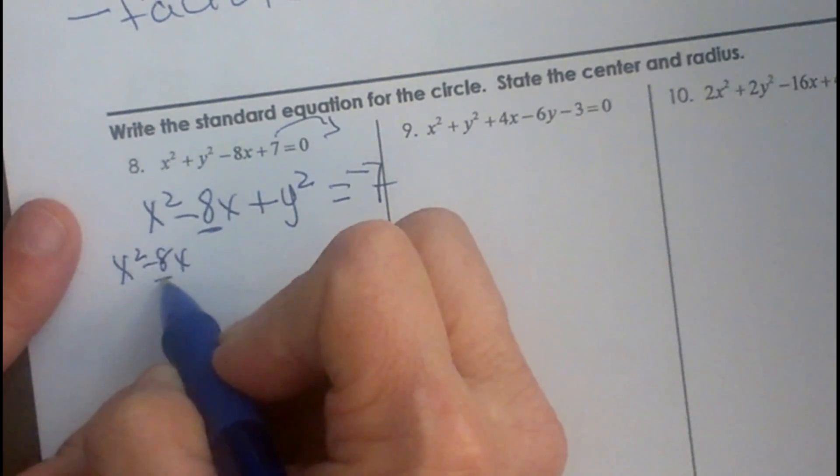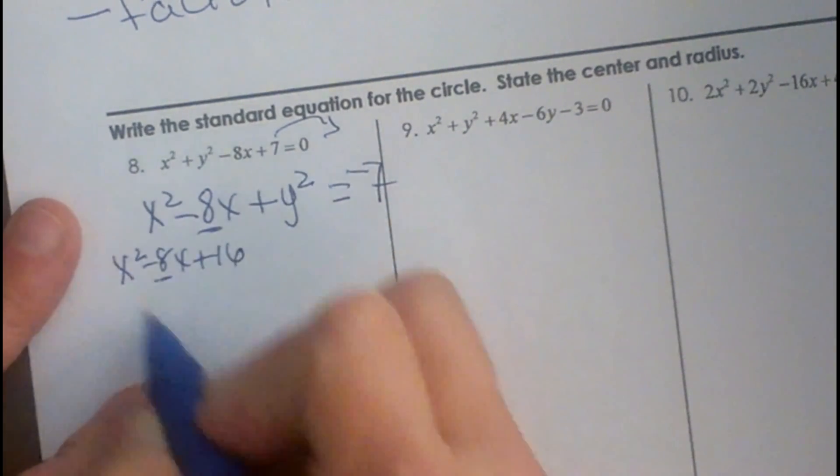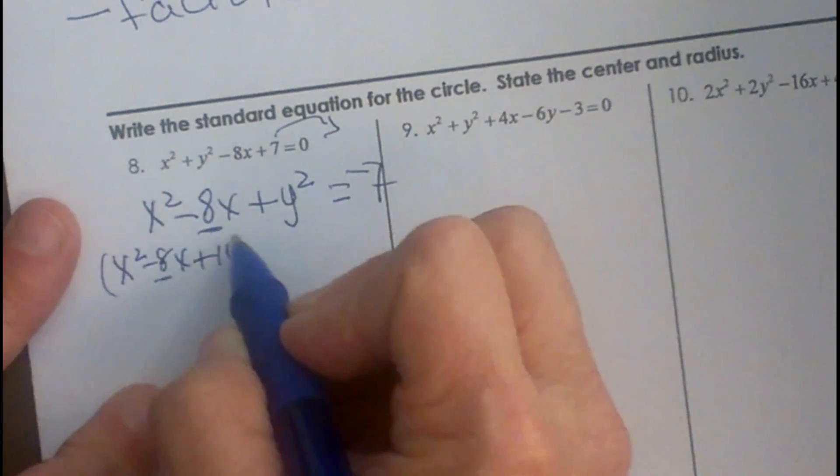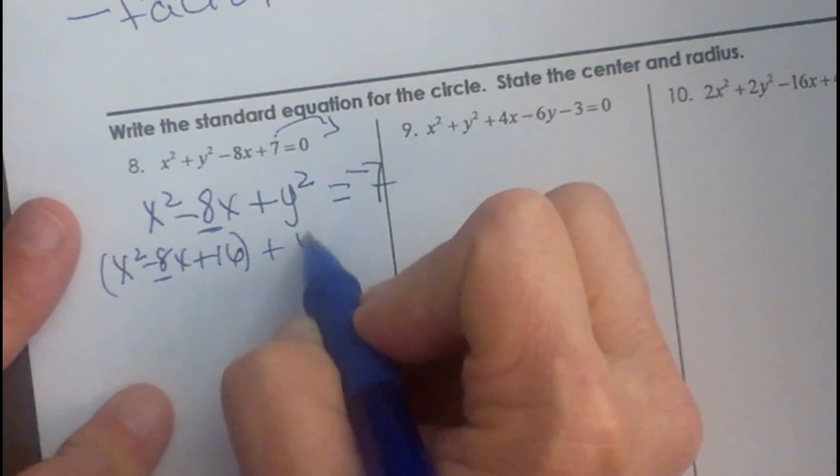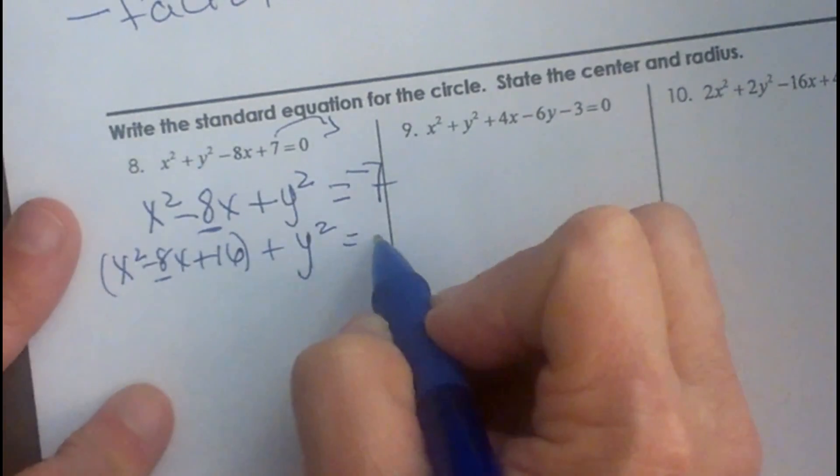So half of 8 is 4, 4 squared is 16 and that will complete the square for the x. The y does not have a constant so we do not have to do anything to add.